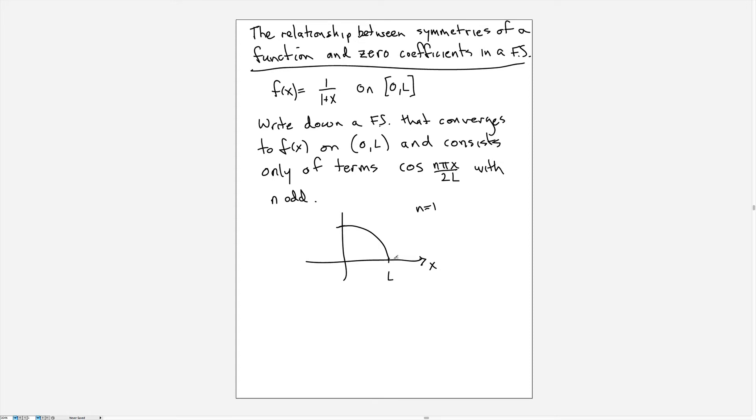We have a zero slope here and a zero value here. If I go to n equal 3 then I have a function that comes down and hits zero earlier and then returns and comes up to zero. This is the cosine of 3 pi x over 2L and I can keep doing this for higher odd integers n. For each one I end up getting a zero slope at the origin and a zero value at L.